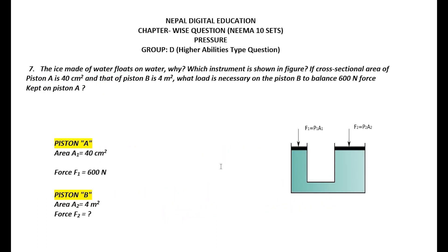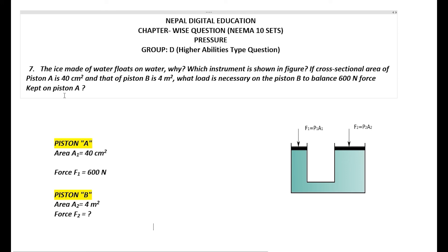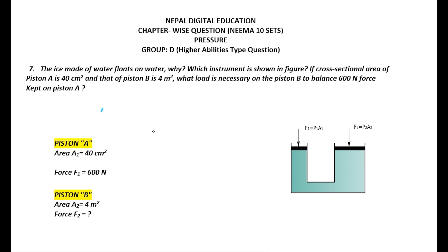Problem number 7: Why does ice made of water float on water? Because the density of ice is less than the density of water, so it floats. The density of ice is 0.917 g per cm cube, but the density of water is 1 g per cm cube. Since the density of ice is less than the density of water, ice floats on water. The instrument shown in the figure is a hydraulic press.